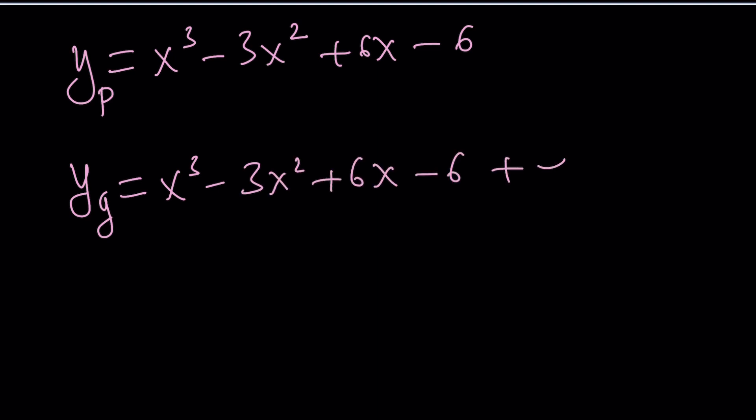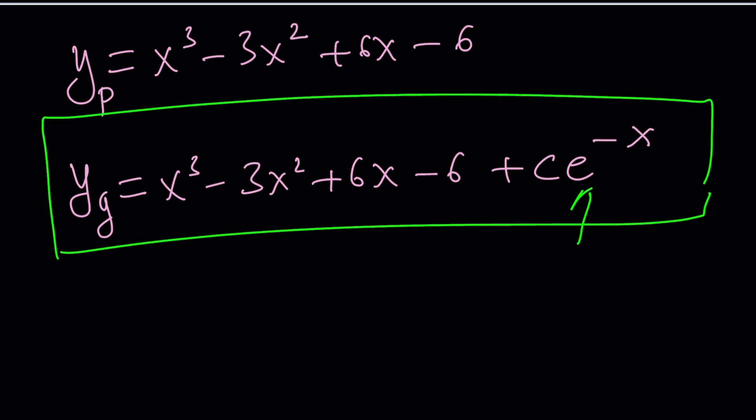But remember, if e to the power negative x is a solution, then c times e to the power negative x is also a solution, right? And you know why this works? Let me tell you. Since this equation, or this part of the equation, satisfies the homogeneous case, it's also going to satisfy the non-homogeneous case, because adding 0 to x cubed is not really going to matter. Make sense? That's the whole idea. This will definitely work for x cubed, and this will contribute nothing. Zilch.